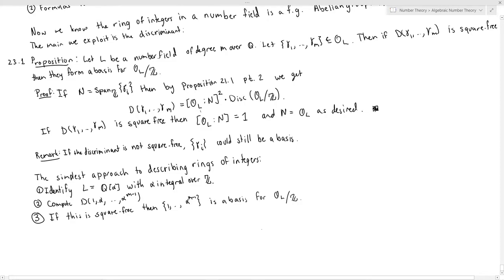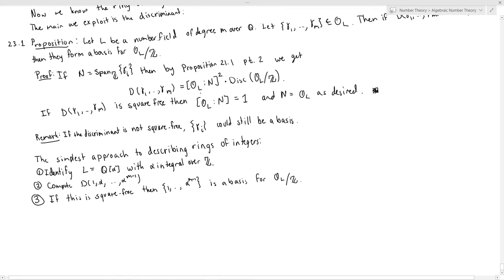The most basic way to find rings of integers requires a fair bit of luck, because you need to find a power basis with a square-free discriminant. This is guaranteed not to work some non-trivial percentage of the time. Warning: if the discriminant is not square-free, you don't know that it isn't a basis. Also, not every ring of integers even has a power basis.